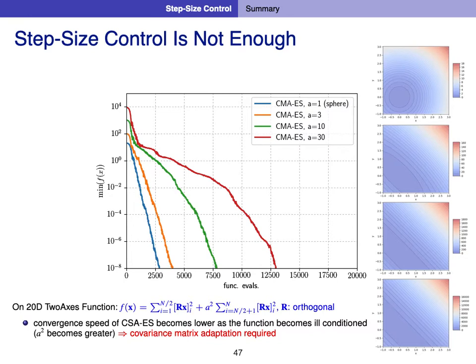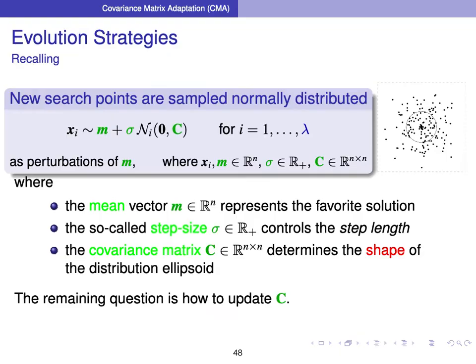This is indeed what covariance matrix adaptation is for. Simulations with covariance matrix adaptation on the same functions show that the performance loss for the most difficult function is about a factor of 5, whereas before it was over a factor of 100. We recall the sampling equations for evolution strategies — we discussed updating the mean vector and step size, and now we talk about updating the covariance matrix, which determines the shape of the distribution.